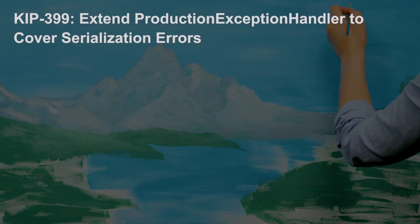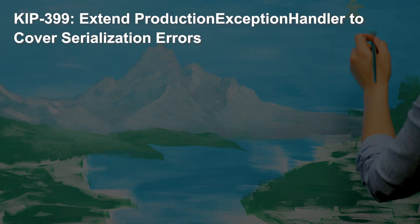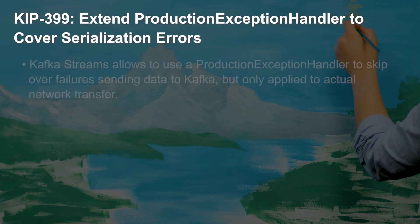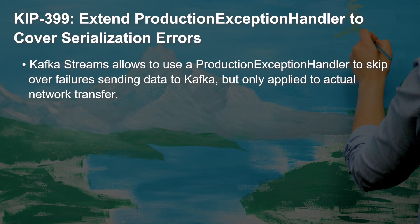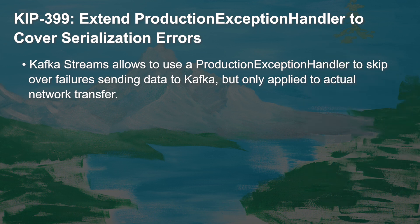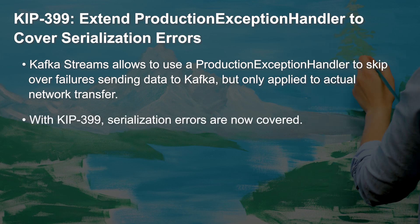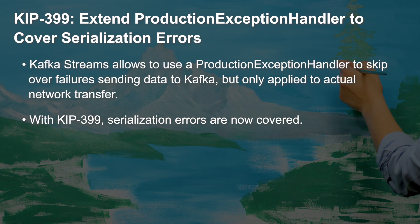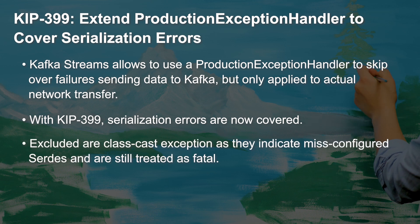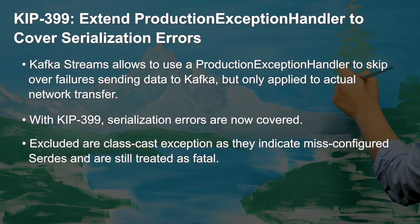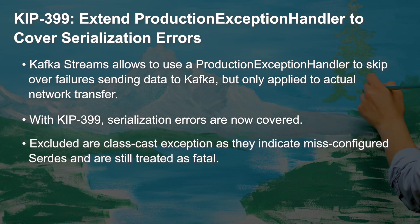Next for Kafka Streams, we have KIP 399, which improves the error handling capabilities in Kafka Streams when it fails to serialize messages. It provides an interface to insert custom messaging for errors and indicate to Streams whether or not it should re-throw the exception, thus causing the application to fail over.